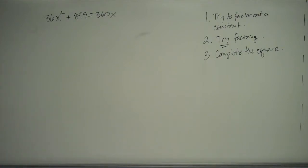Okay, so today we're going to factor this quadratic equation here: 36x squared plus 899 equals 360x.